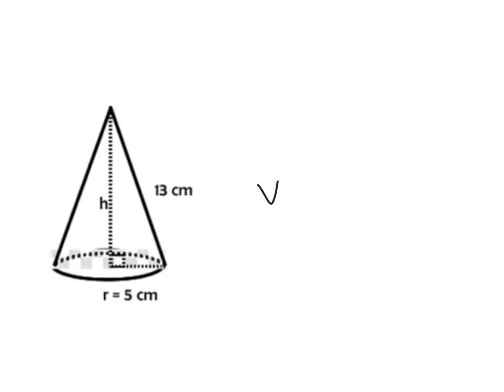So V equals one-third Bh. V equals one-third πr²h, because my base is a circle, so my area is a circle. I now do my substitution. V equals one-third π times 5 squared, because 5 is my radius.